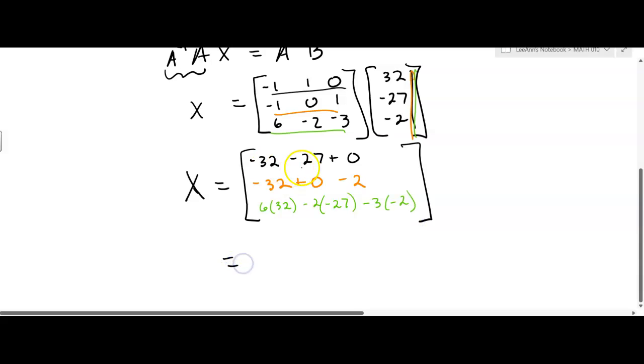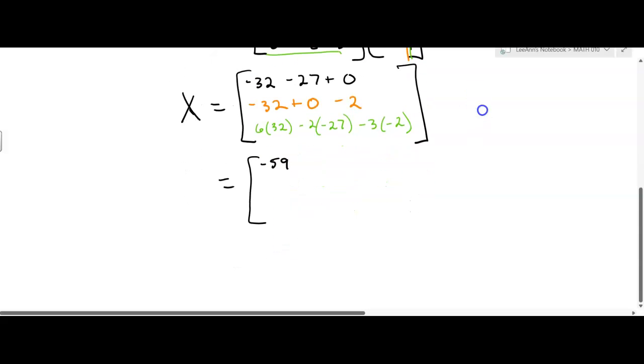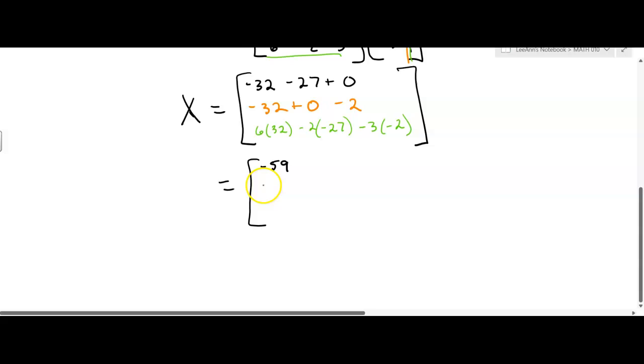All right, negative 32 and negative 27, that's negative 59. And then negative 32 and negative 2 is going to be negative 34. And then the last one, the one in green, I'm going to put it in my calculator.